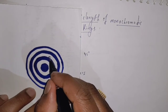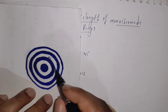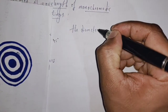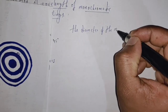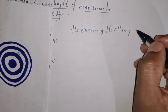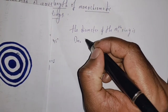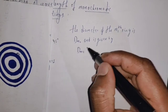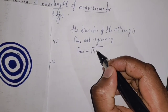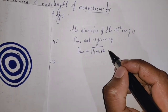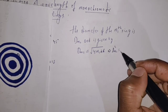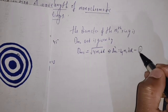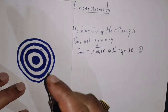We are going to write the diameter for the m1th dark fringe. The diameter of the m1th ring, Dm1, is given by: Dm1 = square root of 4 times m1 times lambda times R, or equivalently, Dm1 squared equals 4 times m1 times lambda times R. Let us call this equation 1.